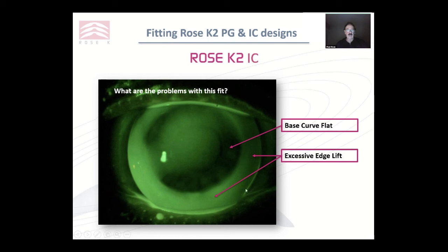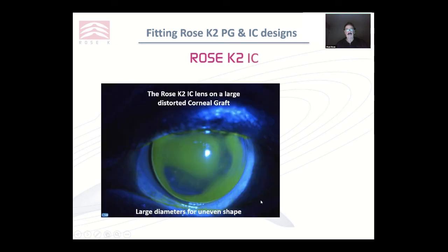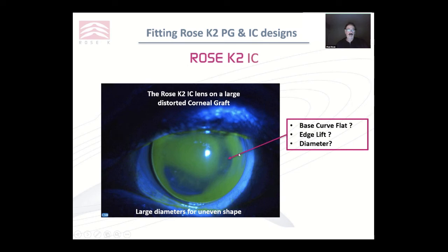What's the main problem with this fit? Again, the base curve is too flat. The lens is riding on the highest point, causing it to lift off inferiorly. This patient was wearing this IC lens quite happily — I didn't change it. Not an ideal fit — you can see touch over that area along the edge of the graft — but the patient was happy. Could I have gone slightly steeper? Maybe. Is the edge lift good here? Yes, not good here. Would I have used quadrant-specific edge lifts? There were no problems. The patient was happy, so I didn't go searching for problems.